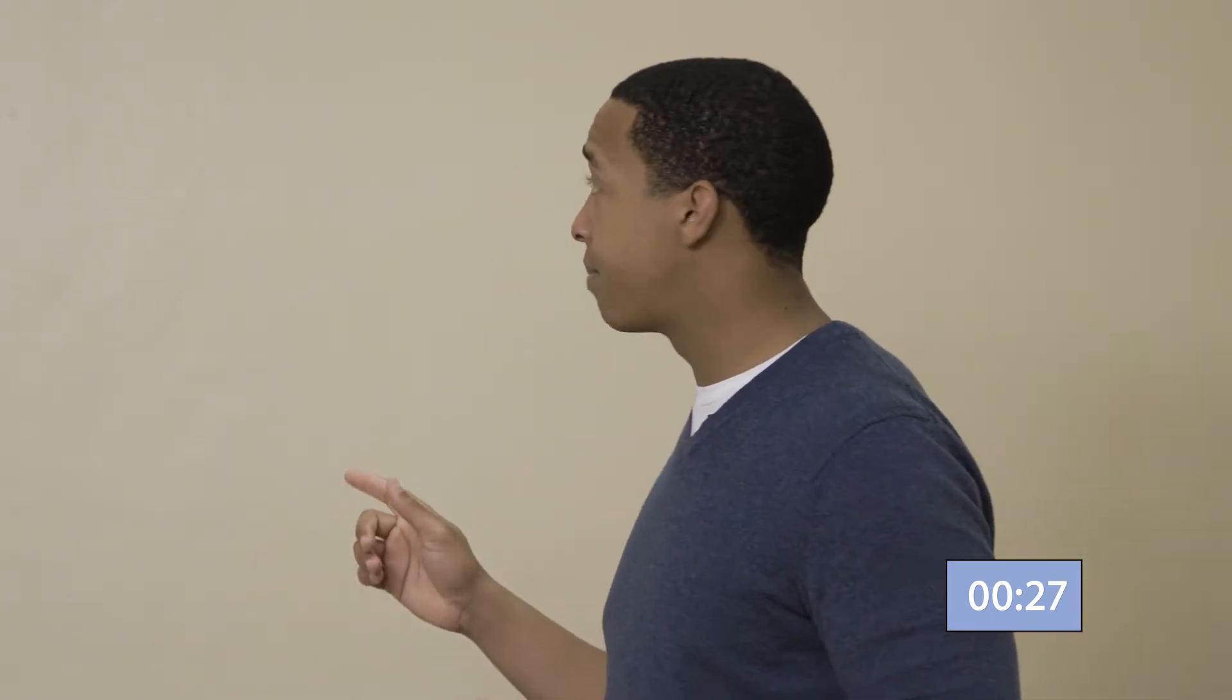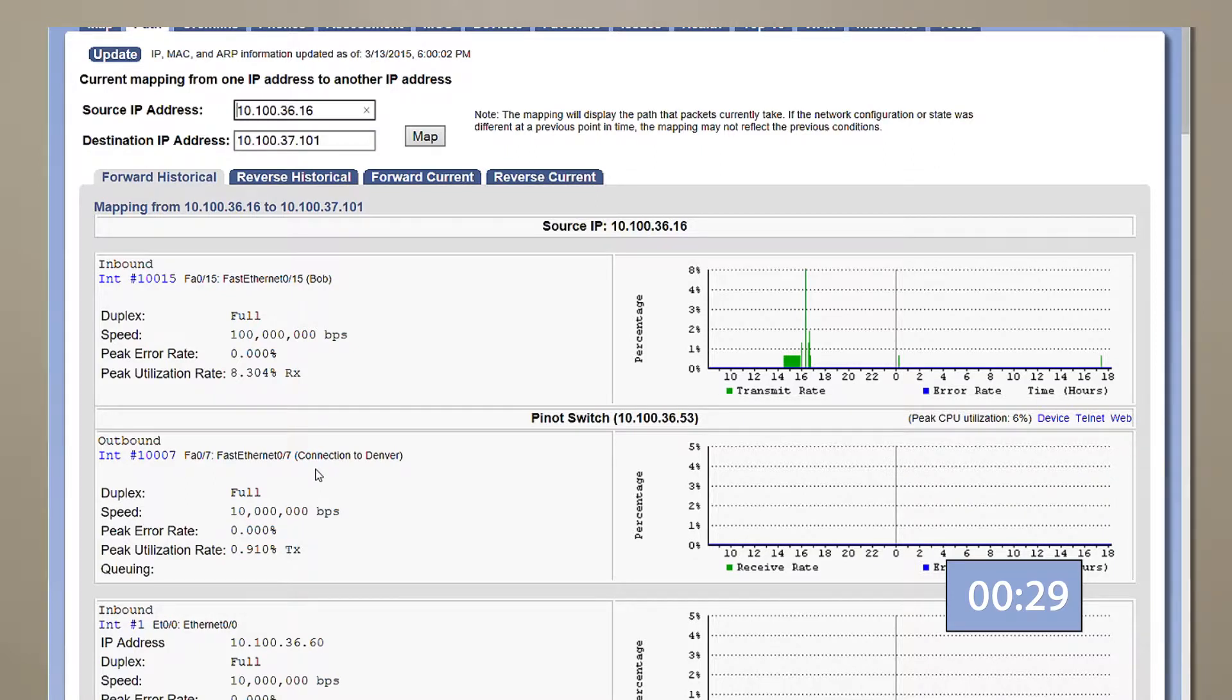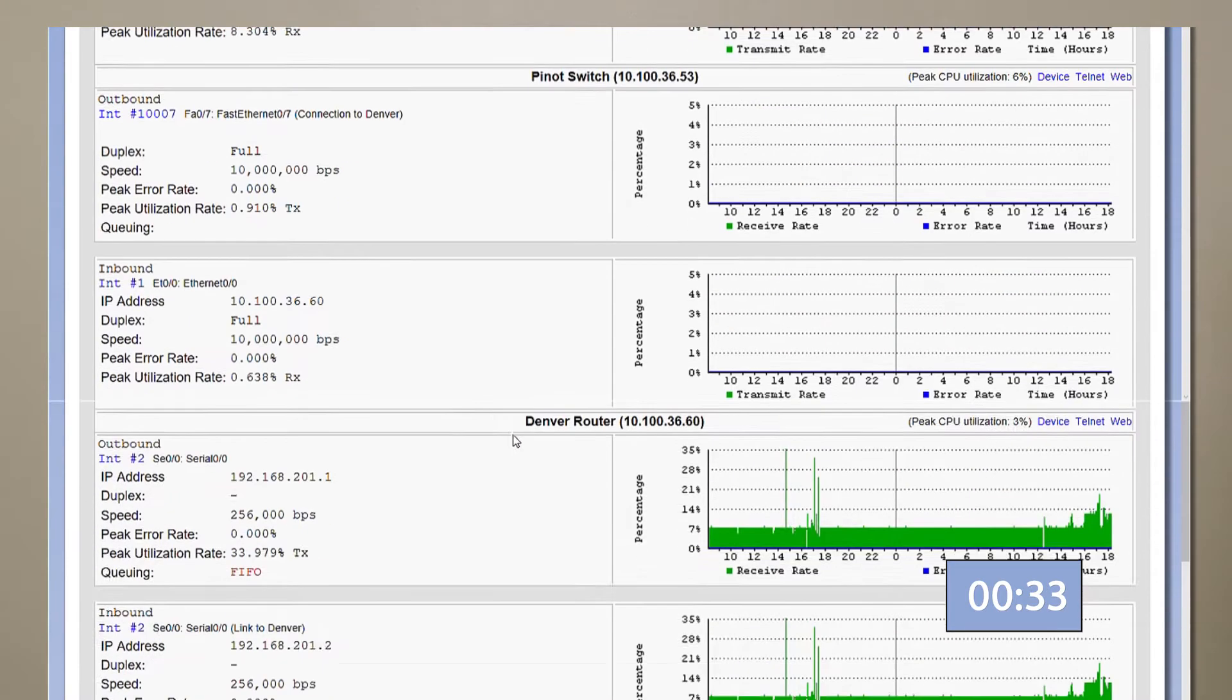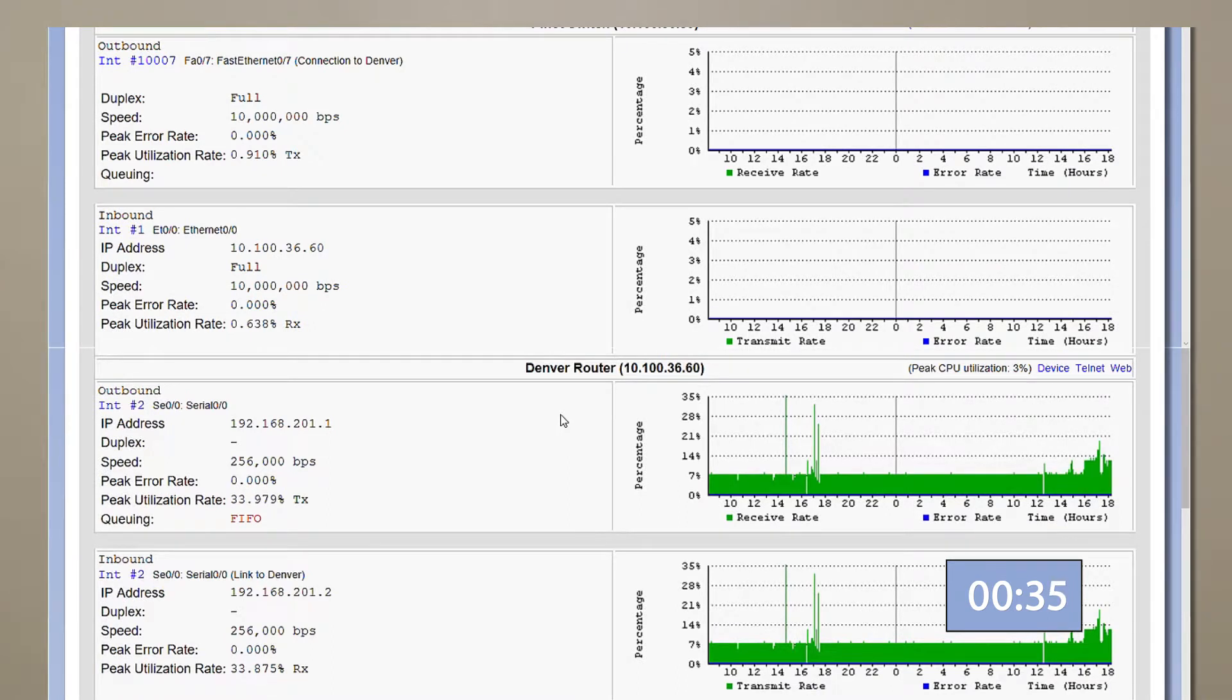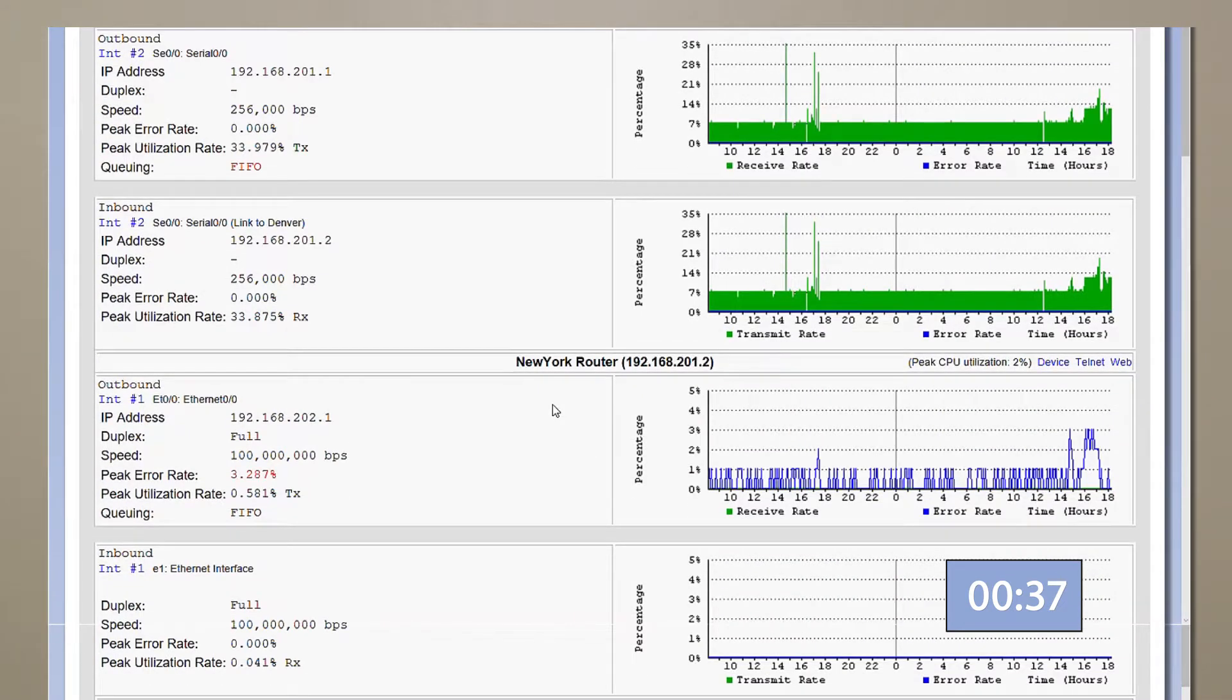The traffic goes out the Pinot switch through Fast Ethernet 07, and it also looks perfectly healthy. Inbound and outbound on the Denver router looks healthy as well. Whoa! The New York router's outbound interface is showing sporadic packet loss throughout the day, and a spike of packet loss just two hours ago. That's suspicious.